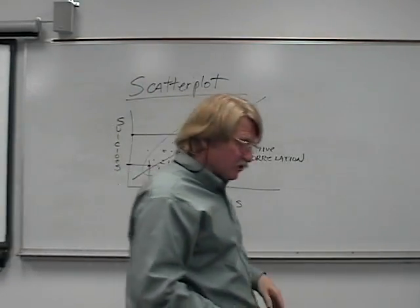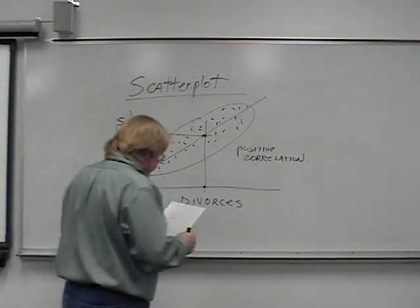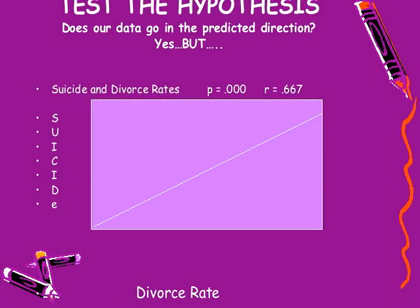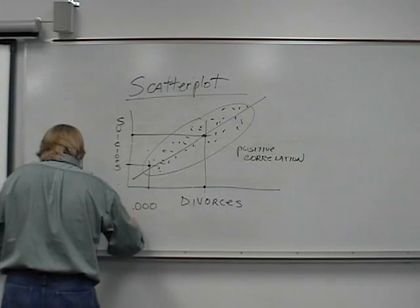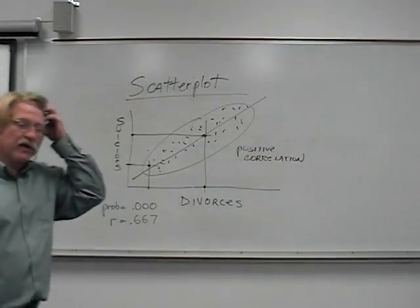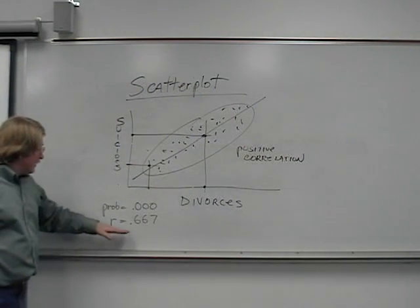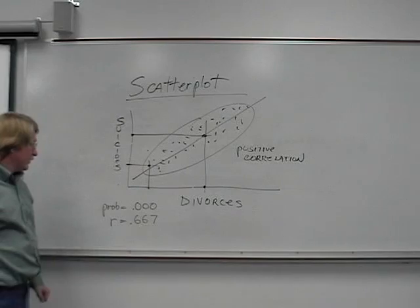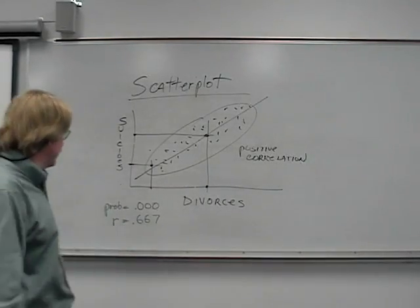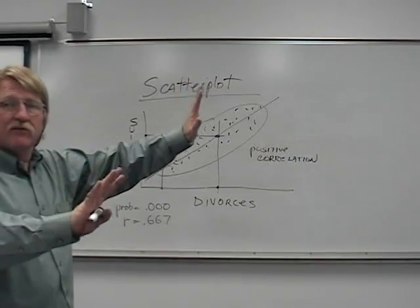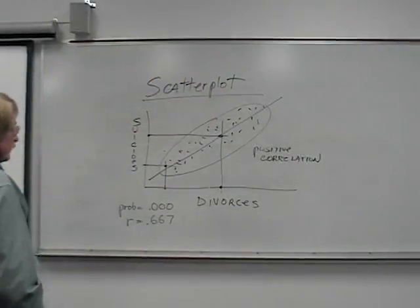This is based on real data. Our p-value is .000 and our r-value is .667 — notice that's positive. From a correlation point of view, it suggests that as suicide goes up, divorces go up about 67% as much — a fairly strong correlation. It's not saying suicides cause divorces or divorces cause suicides. It's saying these two measures, which are both measures of dishevelment in a society, both go up together. It's a positive correlation.